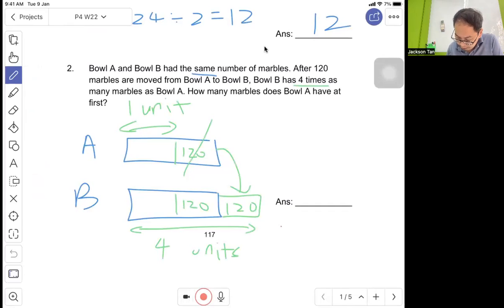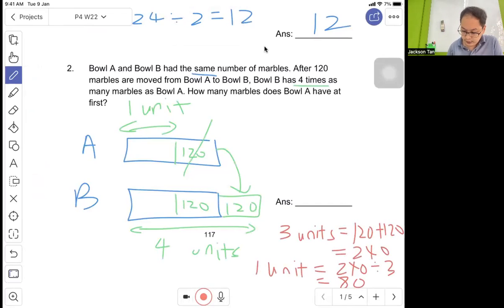Four minus one compared is three units. So three units will be 120 plus 120 equals 240. Then one unit equals 240 divided by 3 equals 80. So how many marbles does Bowl A have at first? Now you know one unit is 80, plus 120 equals 200.